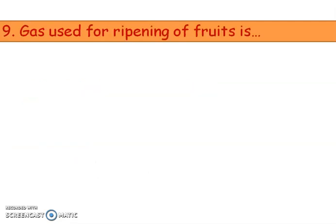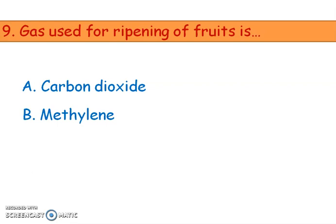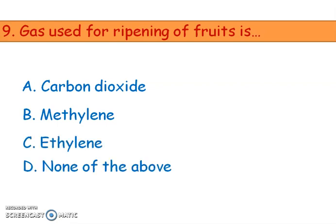Next question: which gas is used for the ripening of fruits? Options are carbon dioxide, methylene, and ethylene. The right answer is option C, ethylene.